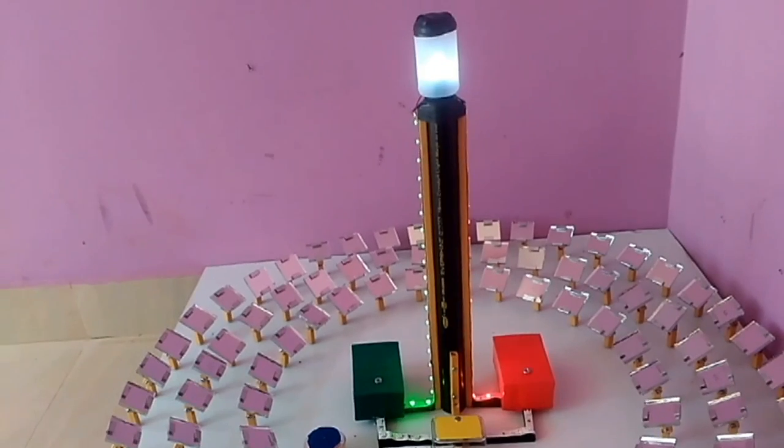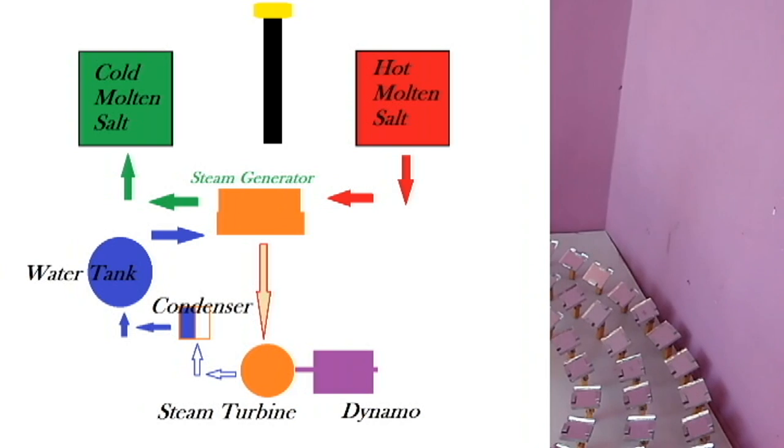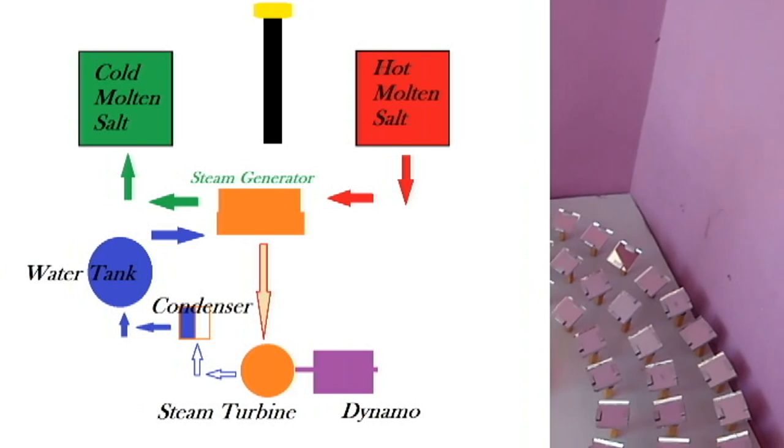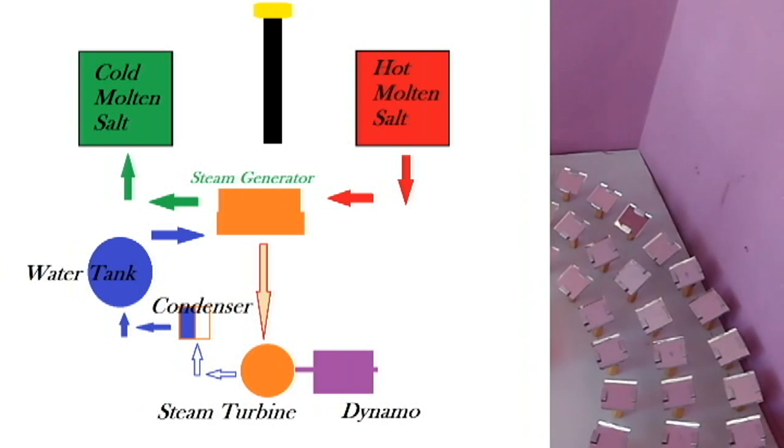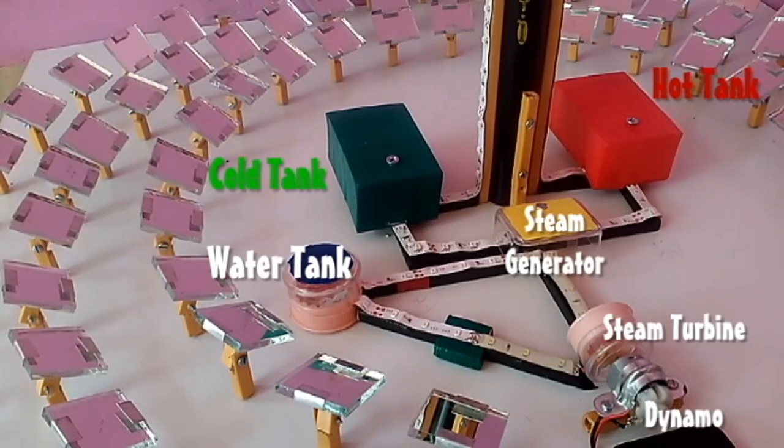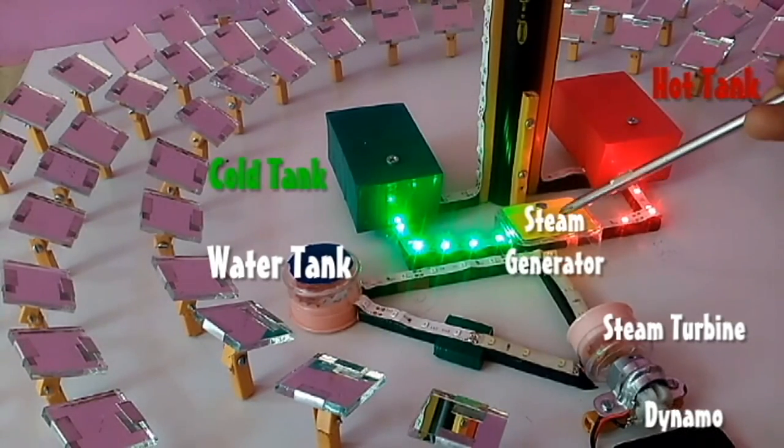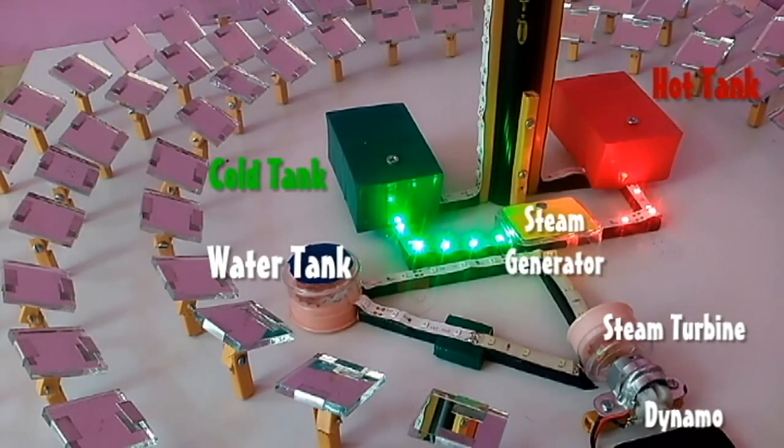This technology leverages liquid molten salt as both the energy collection and the storage mechanism, which allows it to separate energy collection from electricity generation. When electricity is required by the utility, day or night, the high temperature molten salt flows from the thermal storage tank to the steam generator as water is piped in from the water storage tank to generate steam.